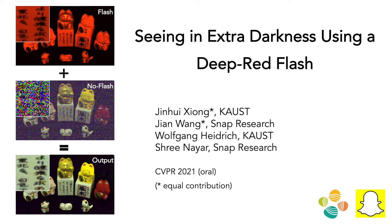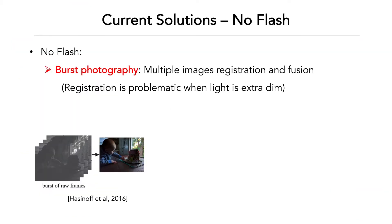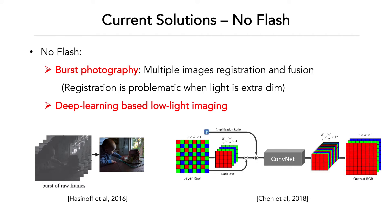In this work, we present a new flash technique for low-light imaging. Burst photography is widely adopted for low-light imaging by fusing a burst of noisy images. More recent approaches tackle the low-light imaging problem using modern neural network models and process on the raw sensor data. These approaches still fail in very dim environments, where the raw data suffers from very poor signal-to-noise ratio and they still need adequate illuminance.